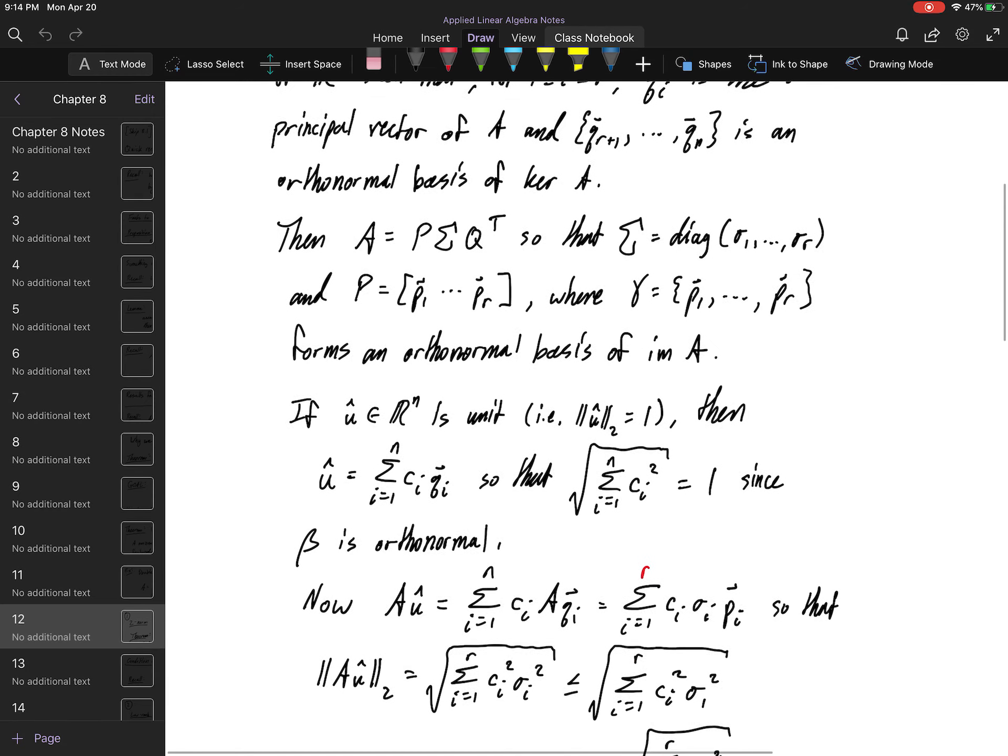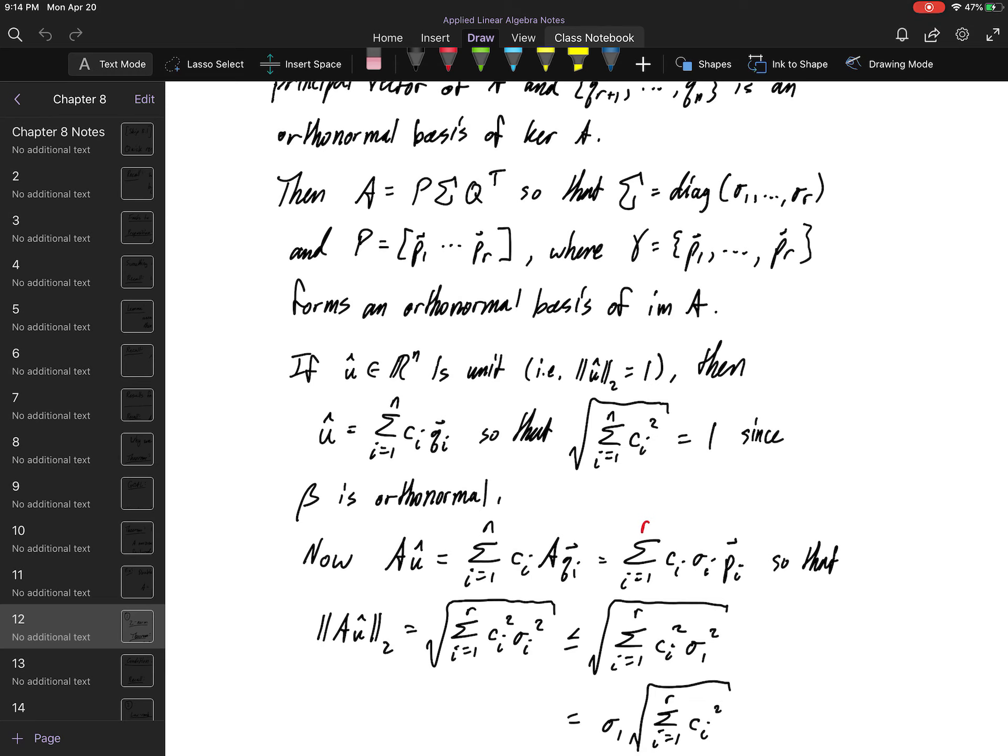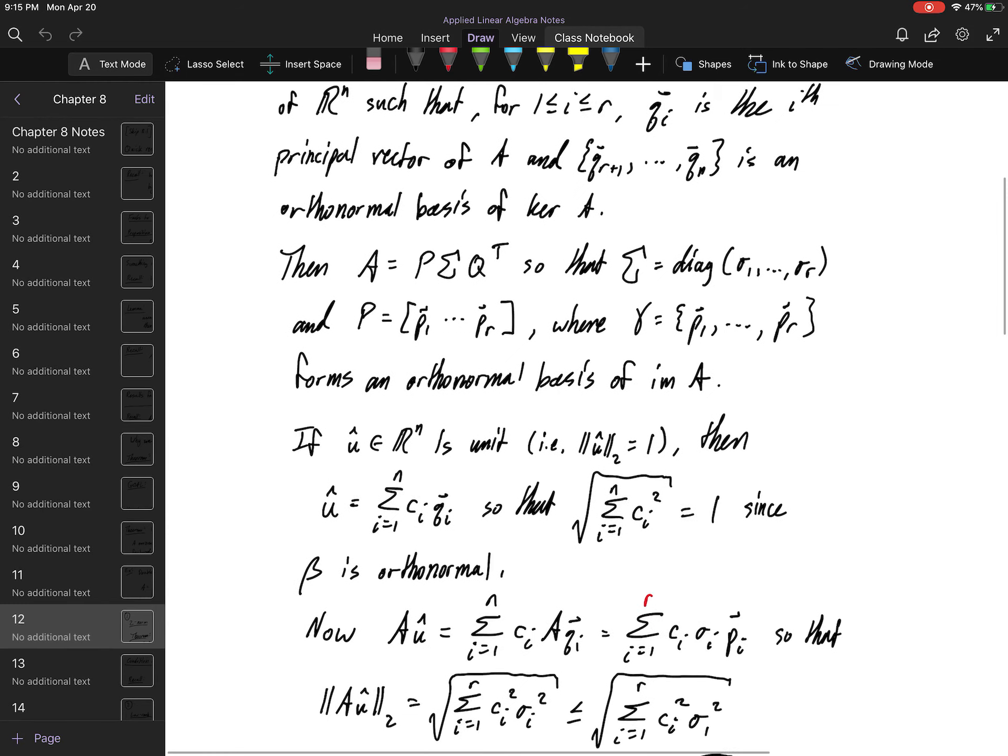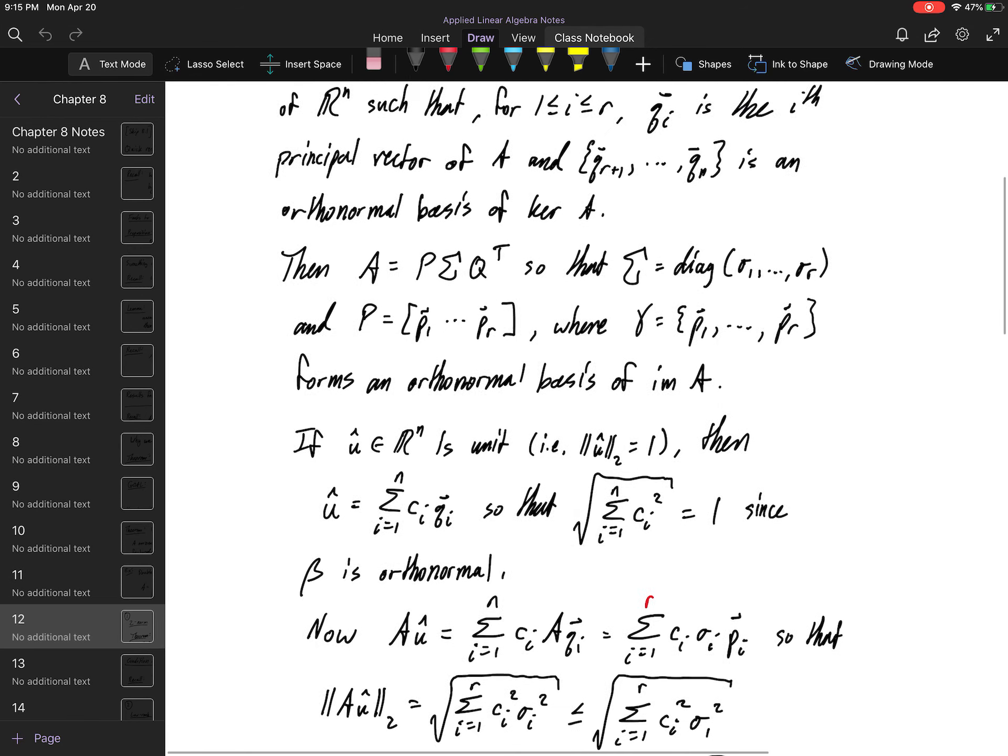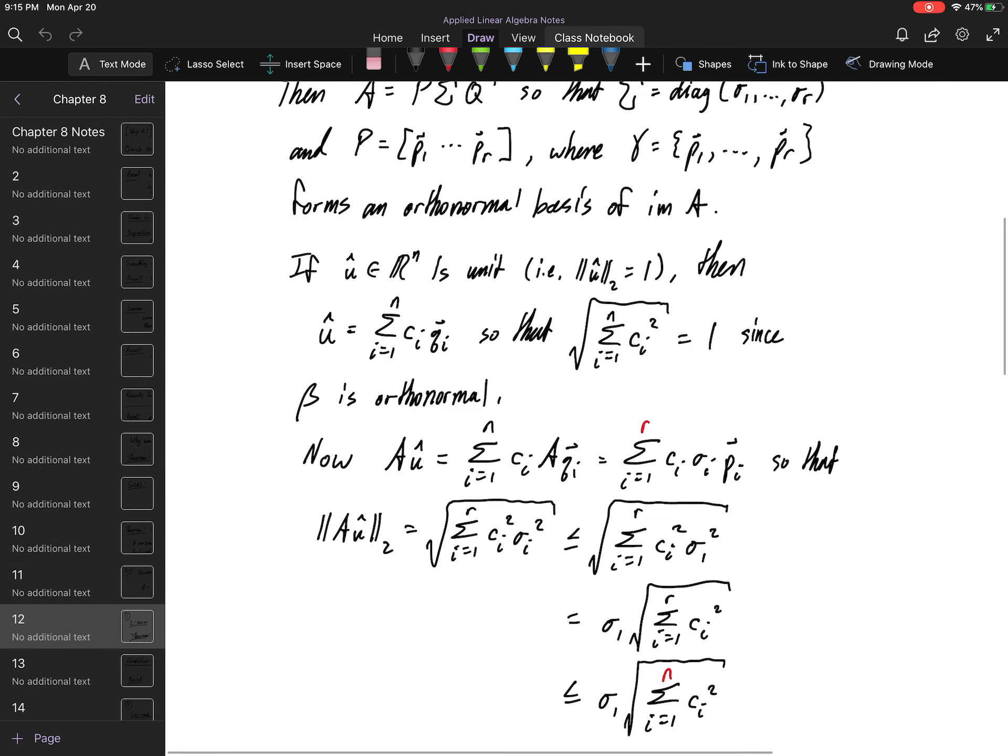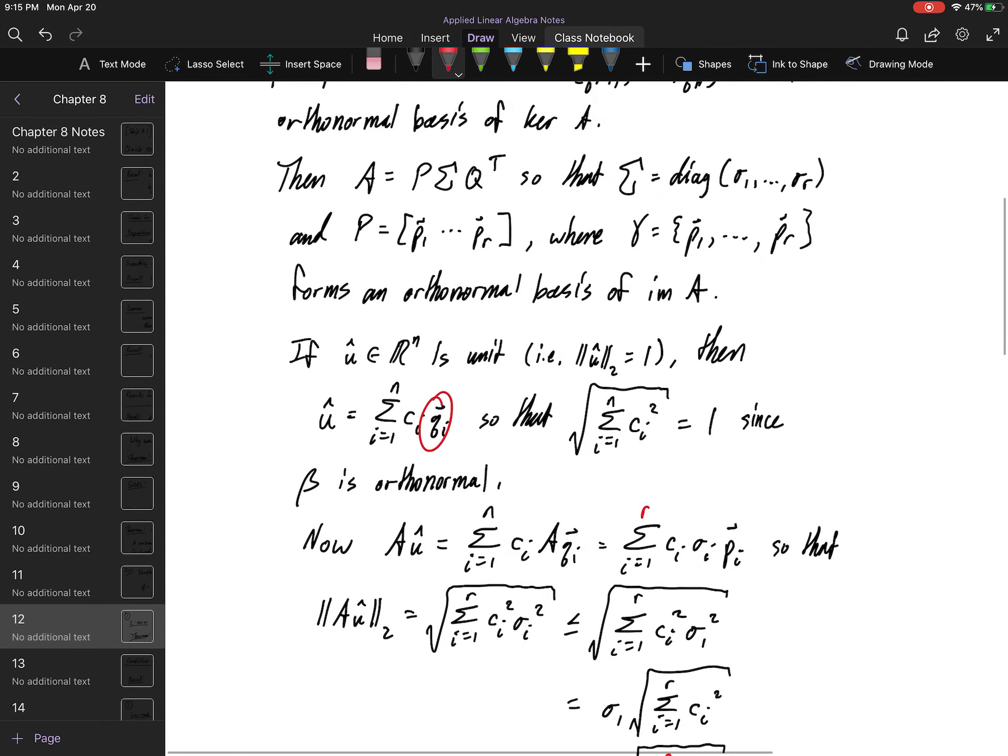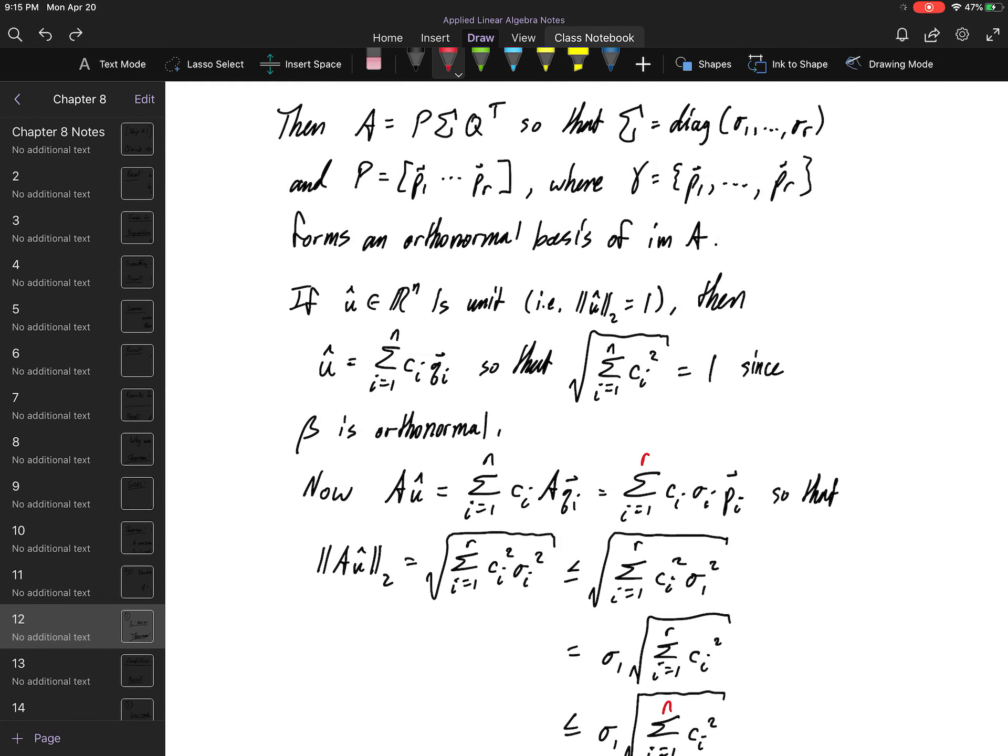So let's go ahead and take a singular value decomposition, such that sigma is equal to the diagonal of the singular values in that particular order, and that p1 through pr are going to create this matrix P, and gamma being the columns of these guys forms an orthonormal basis for the image of A. So that's just the setup that we get for free from the singular value decomposition theorem. We just need to make sure these guys line up in the appropriate way.